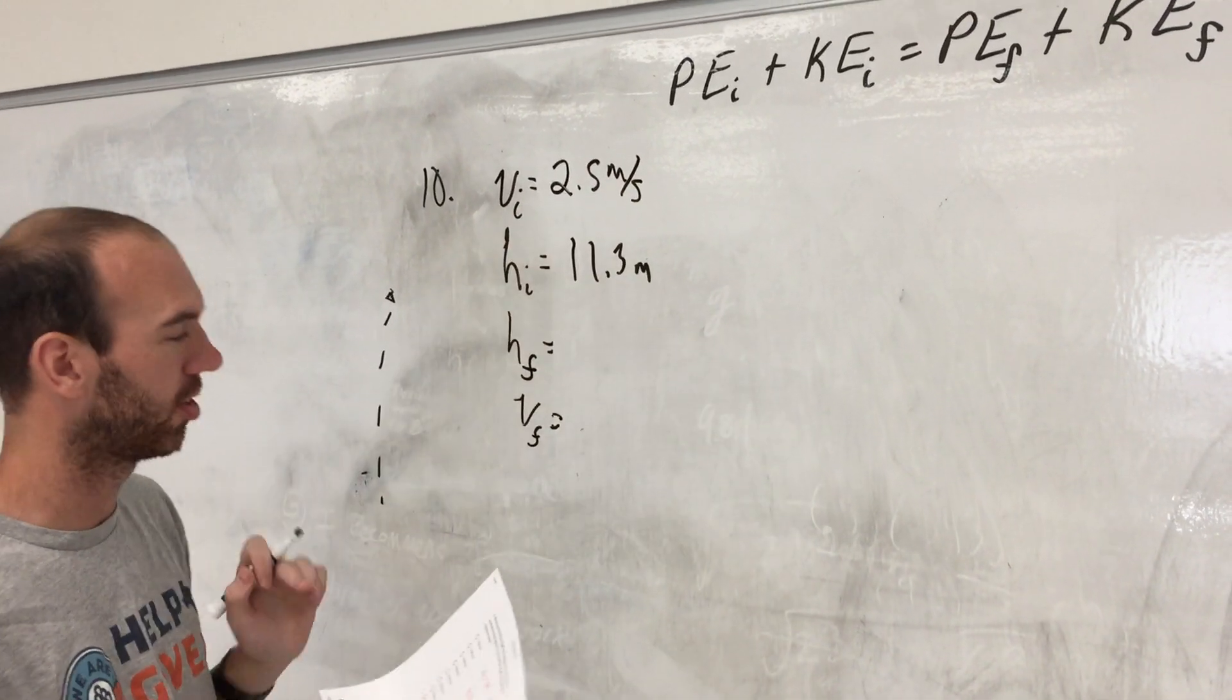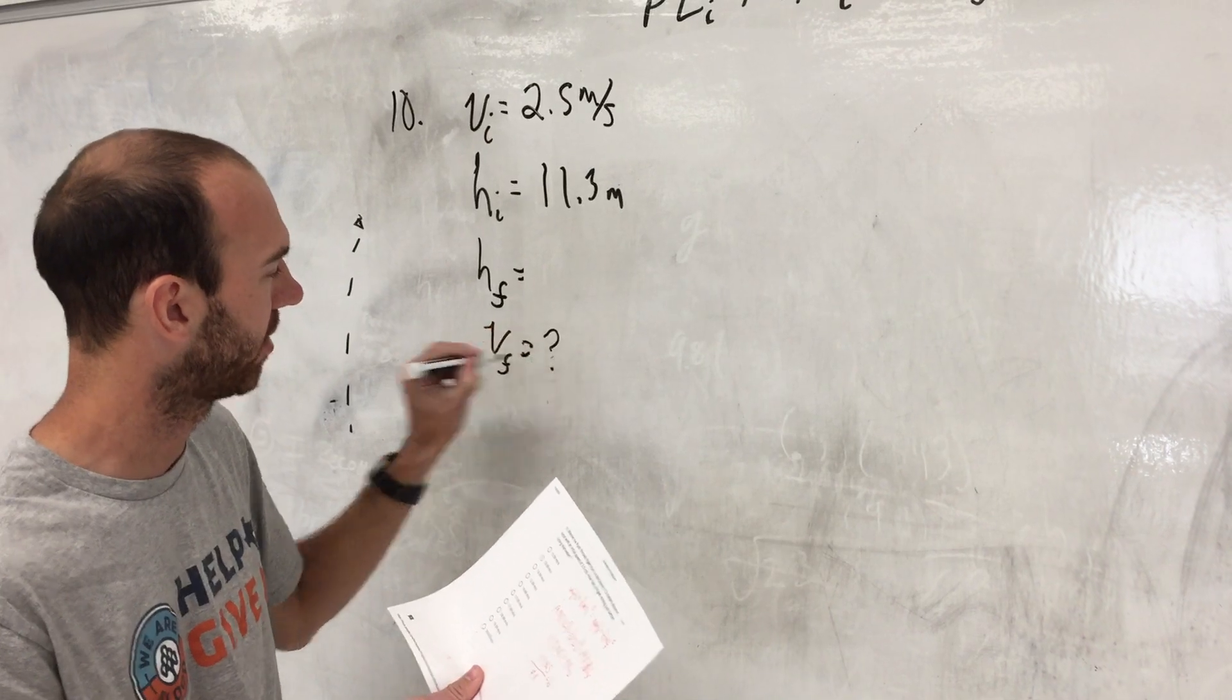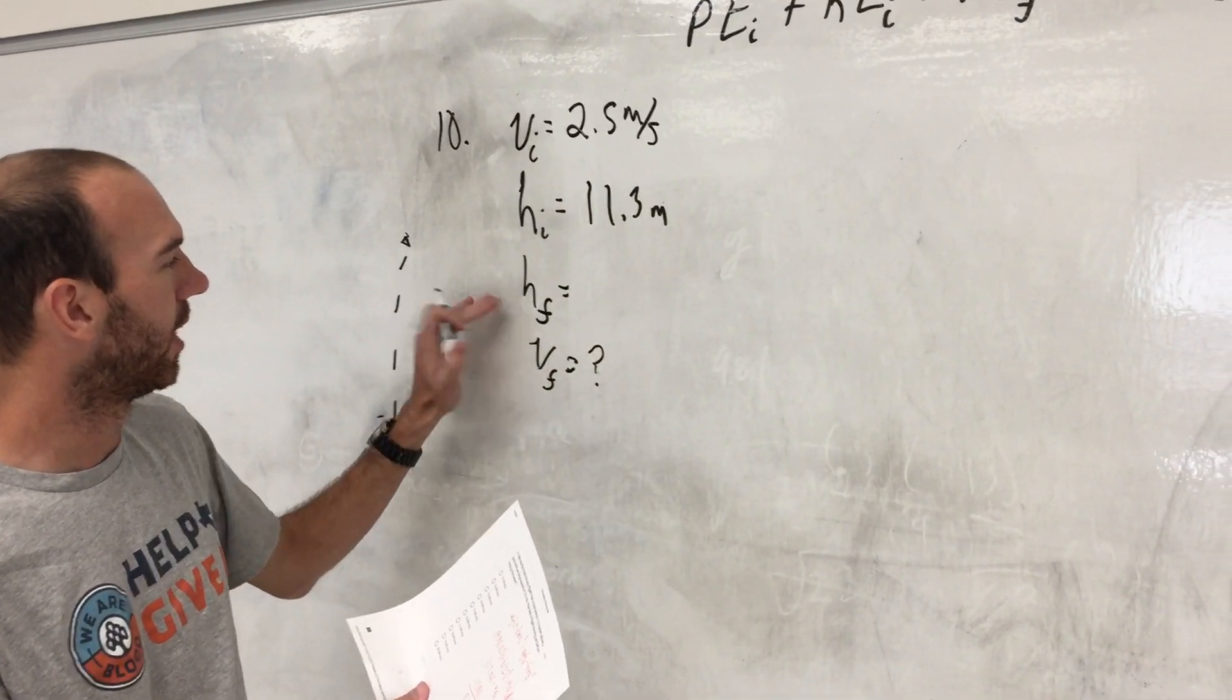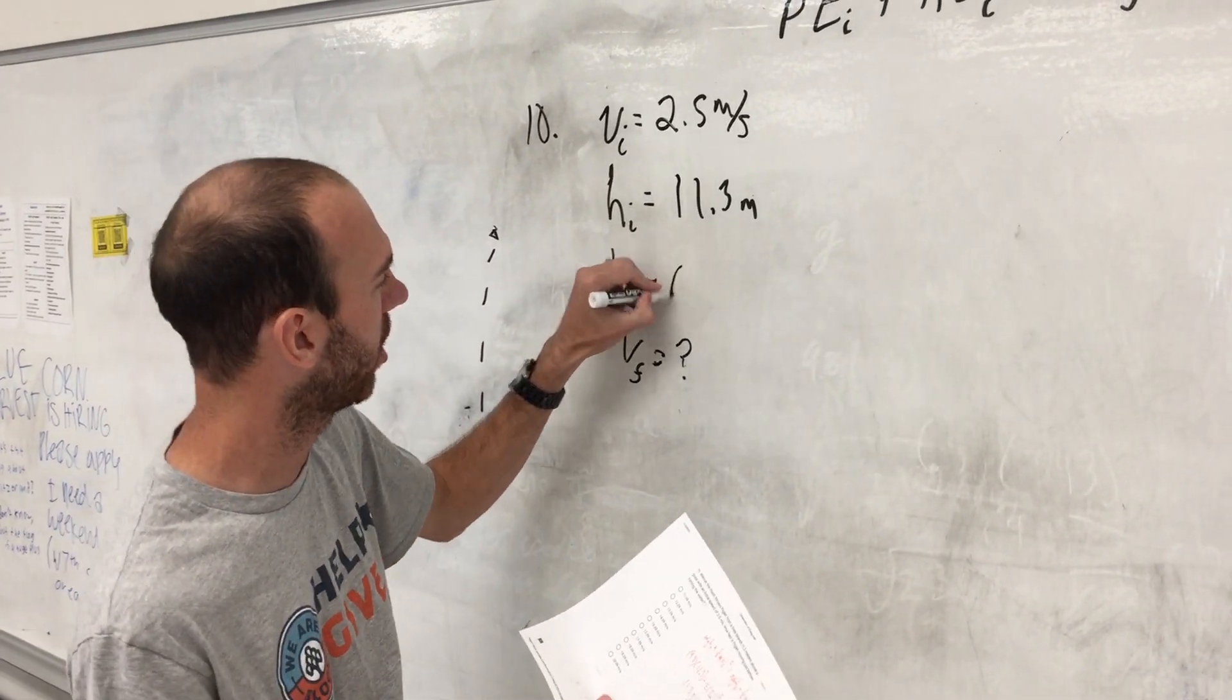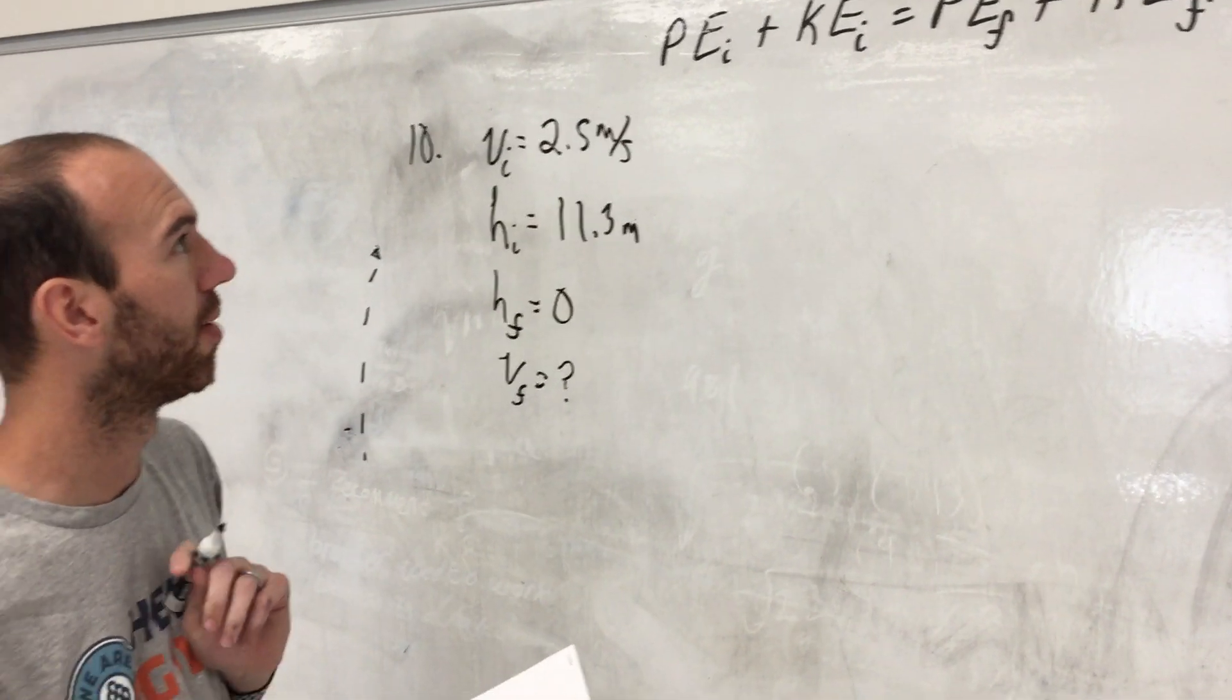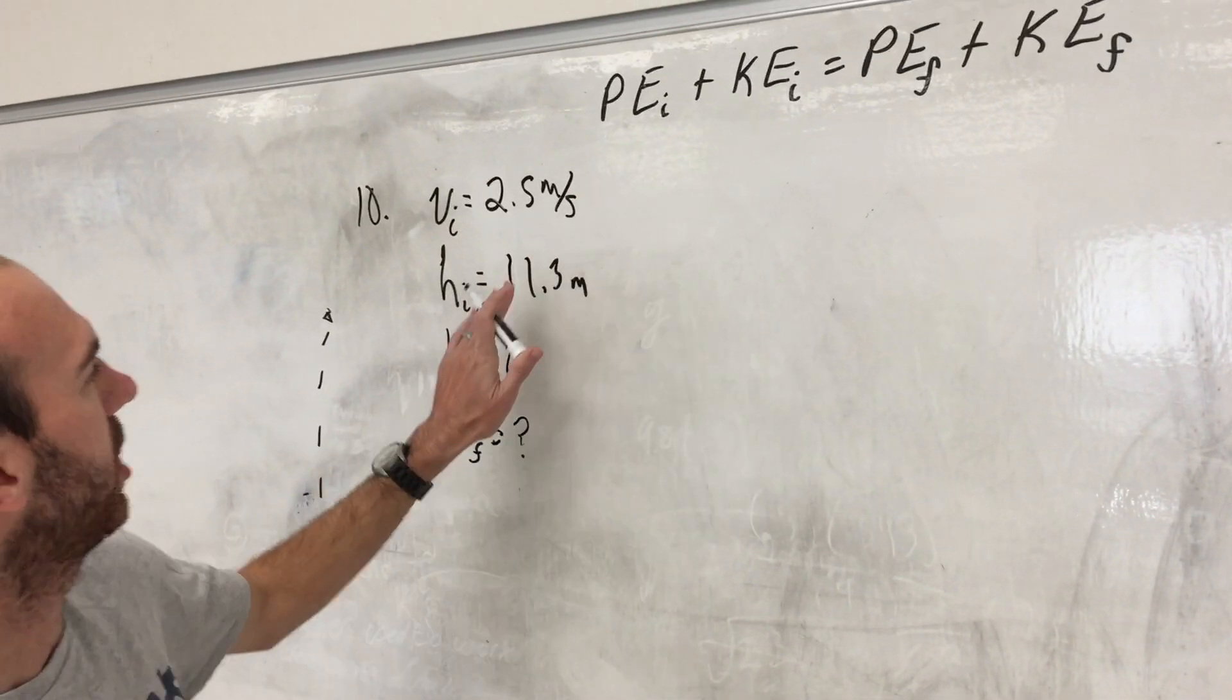Now since Winnie the Pooh throws Piglet down, Piglet does have an initial speed of 2.5 meters per second. Our goal is to find how fast Piglet's moving before he hits the water. Our final height at the water, let's call zero because we're 11.3 meters above the pond initially.